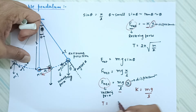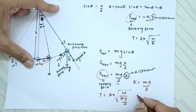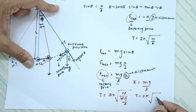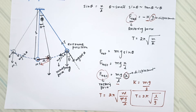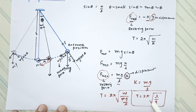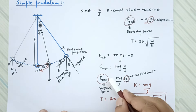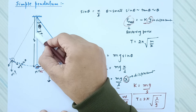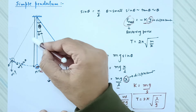Now substituting k equals mg over l into the time period formula T equals 2 pi under root of m by k, we write m over (mg over l). The m cancels, giving T equals 2 pi under root of l over g. This is the expression for the time period of a simple pendulum. The frequency is the reciprocal. Notably, the time period depends only on the length l and acceleration due to gravity g — not on the mass — but this expression is valid only for very small oscillations.